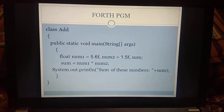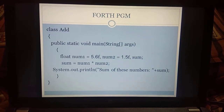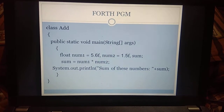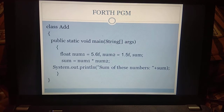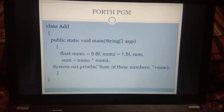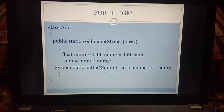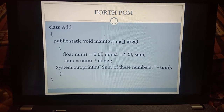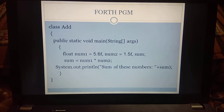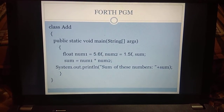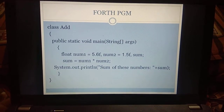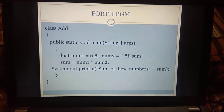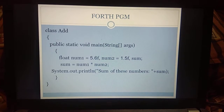num1 = 5.6f, num2 = 1.5f, and sum is the resultant variable. Sum is equal to num1 multiplied by num2. The value 5.6 will be multiplied with 1.5 and stored in sum. We are using system.out.println for displaying the sum value — 'product of these numbers' concatenation operator plus sum. So it will multiply 5.6 and 1.5 and display the result as output. Key point: whenever you are declaring a floating point variable you have to give 'f' after the value. If you are getting the value from the user, no need to give 'f'. While declaring the value in the program, 'f' is mandatory in Java.